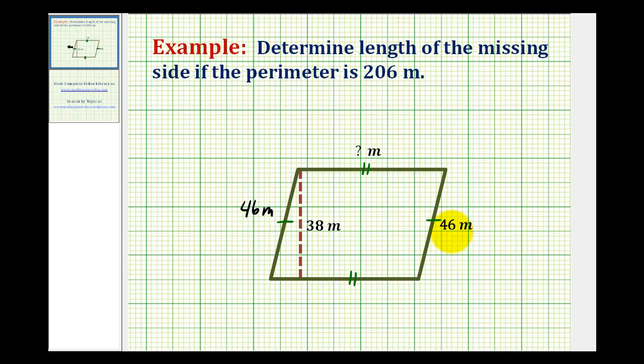46 meters plus 46 meters would be 92 meters. So we'll take the perimeter of 206 meters and subtract 92 meters. And this will give us the length of this side and this side.